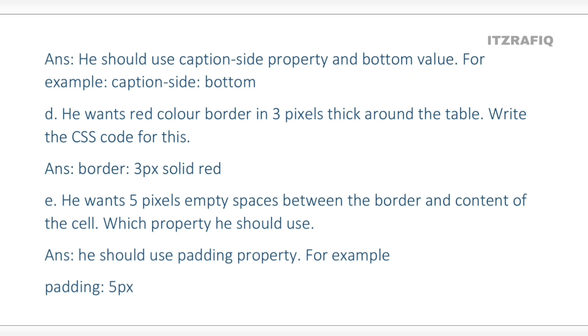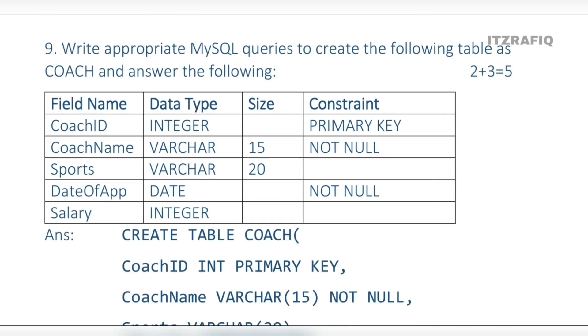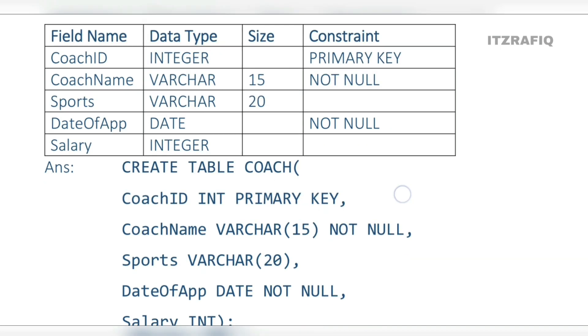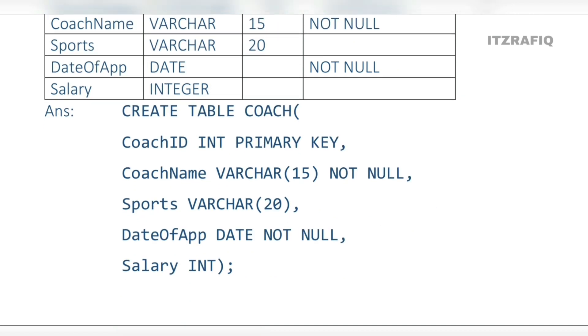Question 9: write MySQL queries to create the following table COACH. CREATE TABLE COACH, then CoachID INT PRIMARY KEY, CoachName VARCHAR(15) NOT NULL, Sports VARCHAR(20), DateOfBirth DATE NOT NULL, Salary INTEGER, then closing bracket, semicolon.